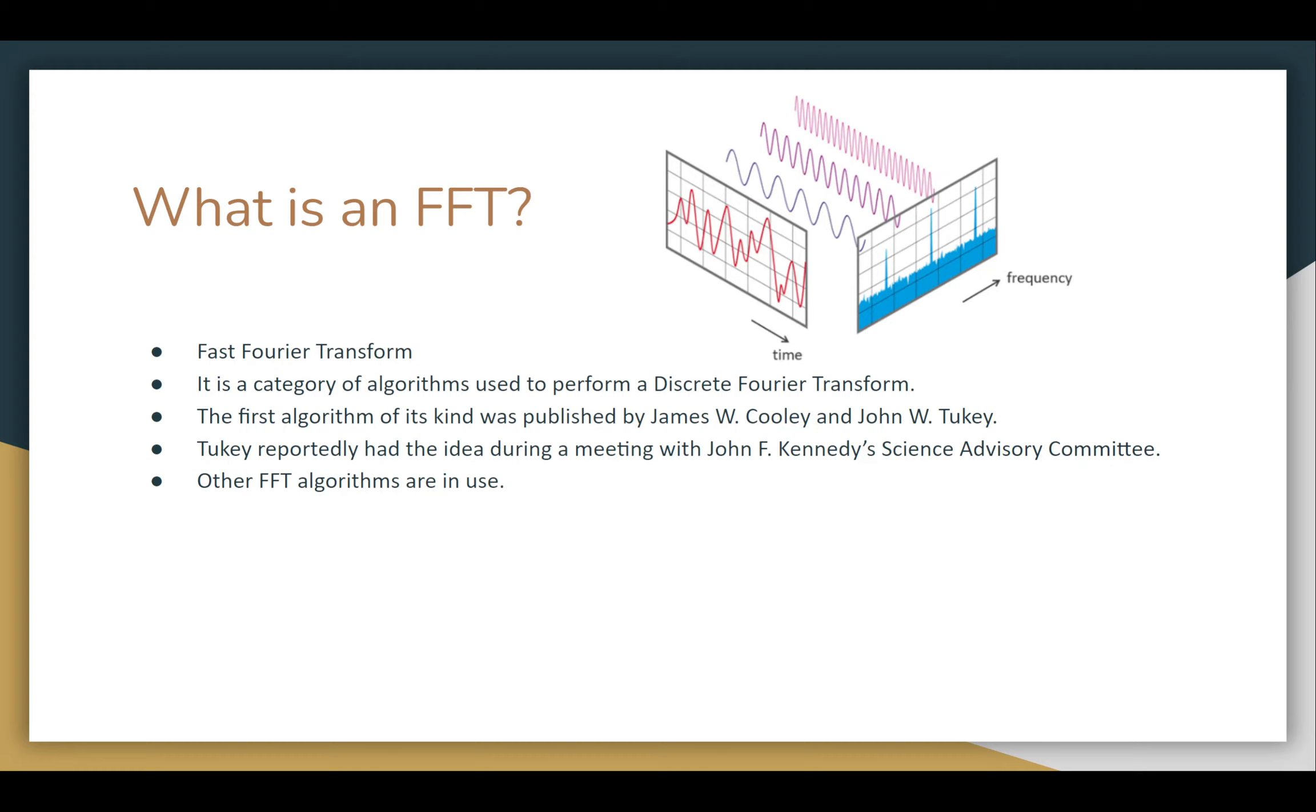One thing that's interesting about the Cooley-Tukey algorithm is that Tukey and John F. Kennedy's science advisory committee were discussing possible methods for detecting Soviet Union nuclear weapons tests, with the issue being that they can't send someone into the Soviet Union to lay eyes on testing happening. They had to come up with the means of putting a type of sensor, a seismic detector, outside of the Soviet Union. During this meeting, Tukey had the initial idea for the Cooley-Tukey algorithm, and he was paired up with Cooley to create the algorithm.